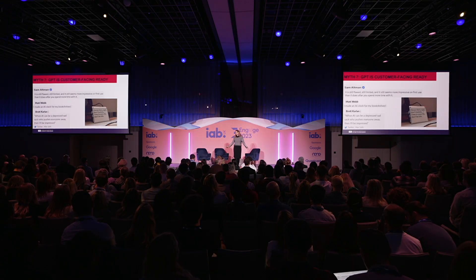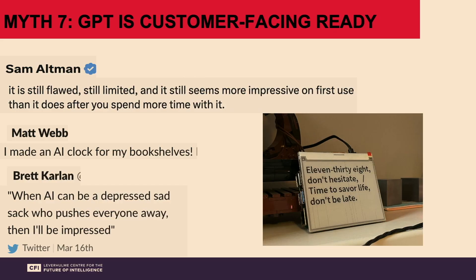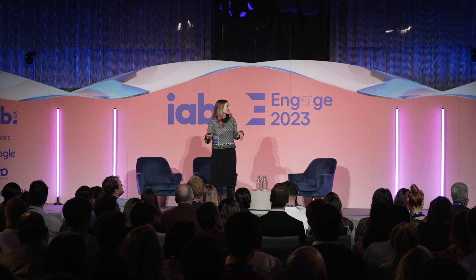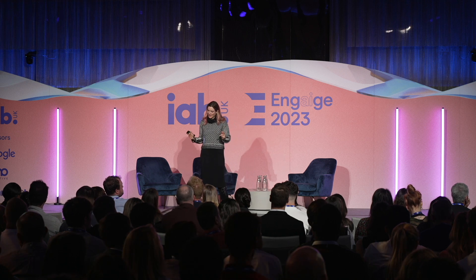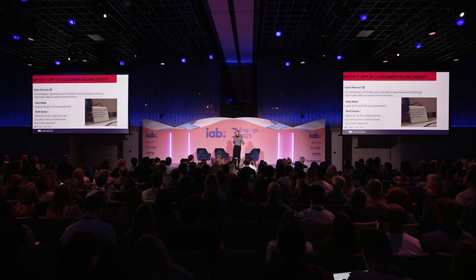Myth seven: GPT is customer-facing ready. Many of you probably know that's not the case. Even Sam Altman said it's still flawed, still limited, and seems more impressive on first use than after you spend more time with it. We have parlor tricks right now — people making alarm clocks with generated poems. But as someone put it, when AI can be a depressed, sad sack who pushes everyone away, then I'll be impressed. People in marketing, branding, and law are using GPT, and apparently 45% of Cambridge students use it to support their essays. Using it to prompt ideas is fine, but putting these things out for customers to interact with comes with real risks.